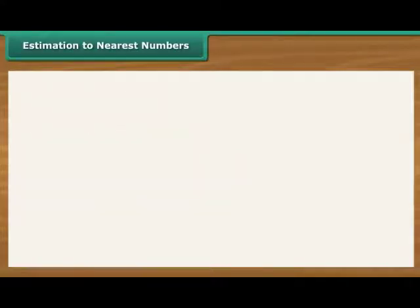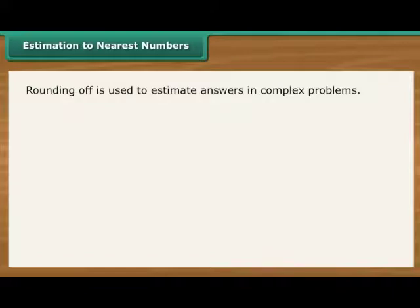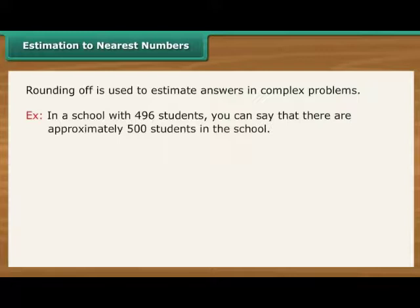Estimation to nearest numbers. As we come across large numbers, performing calculations on them becomes complex. To avoid the complexity, estimation or rounding off is used. For example, in a school with 496 students, you can say that there are approximately 500 students in this school.